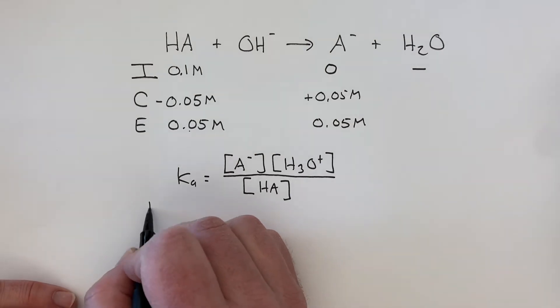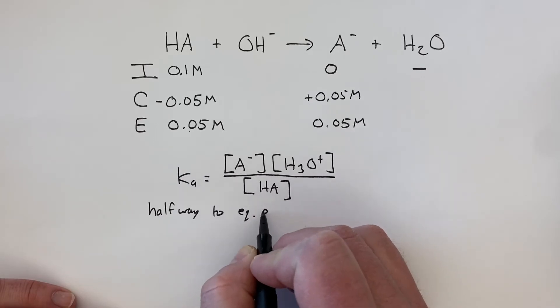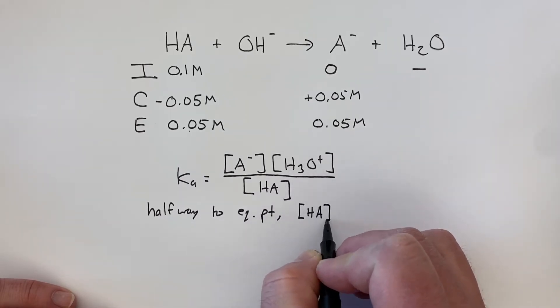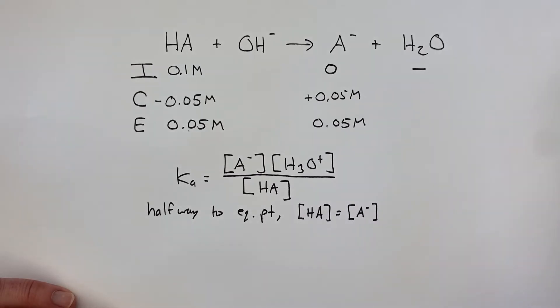So halfway to the equivalence point, the concentration of the weak acid remaining equals the concentration of the anion or the conjugate base present in the solution.